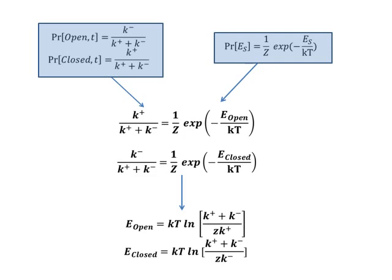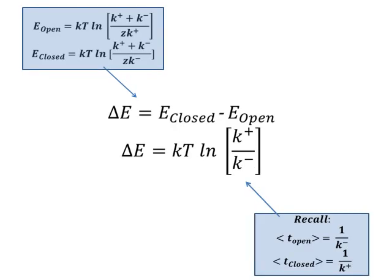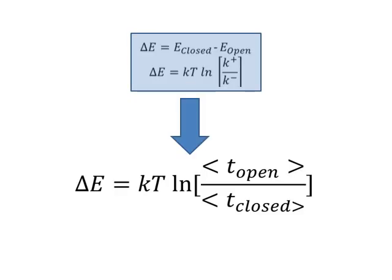The difference in energy can then be found, recalling that the average time for the ion channel to remain closed or open is equal to the inverse of the rate at which transitions take place from closed to open or open to closed respectively. We substitute it into the equation as well. Under thermodynamic equilibrium, the temperature and Boltzmann constant are constant, the difference in the energies are therefore solely dependent on the average open and closed times. Therefore, by measuring the mean open and closed times of two state ion channels, we are able to estimate the difference in the energies of the ion channel states using this equation.